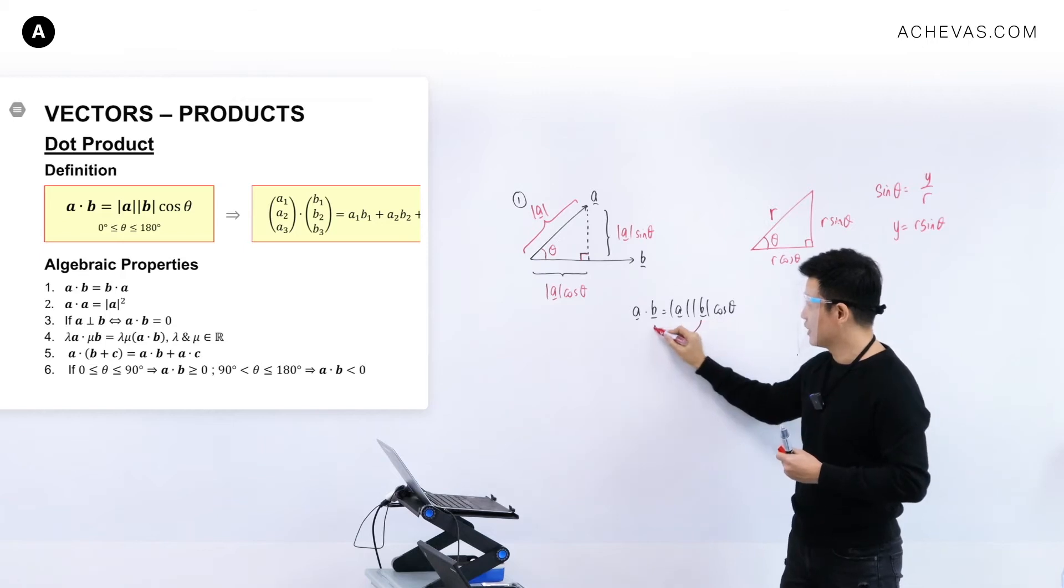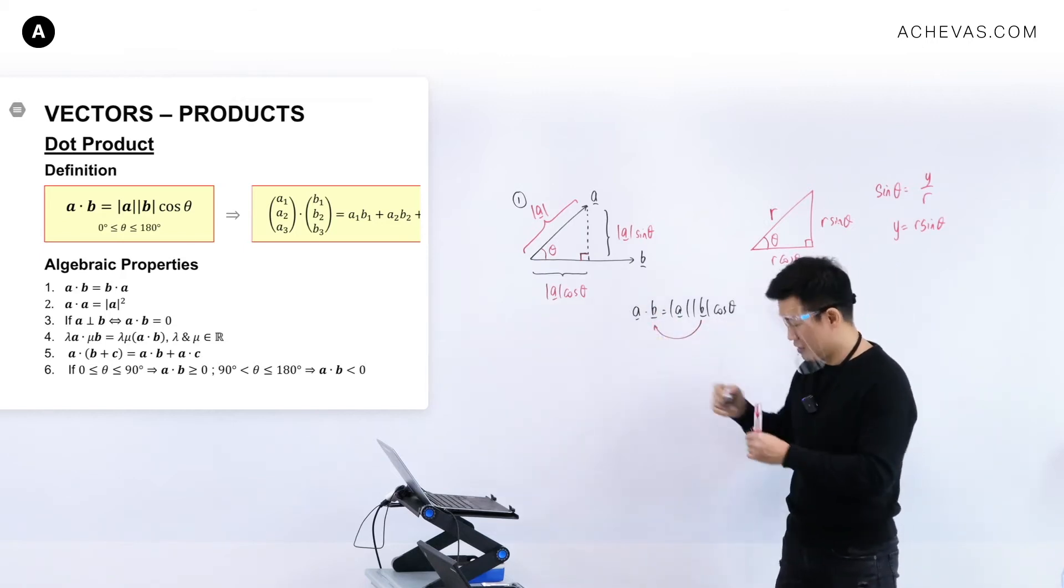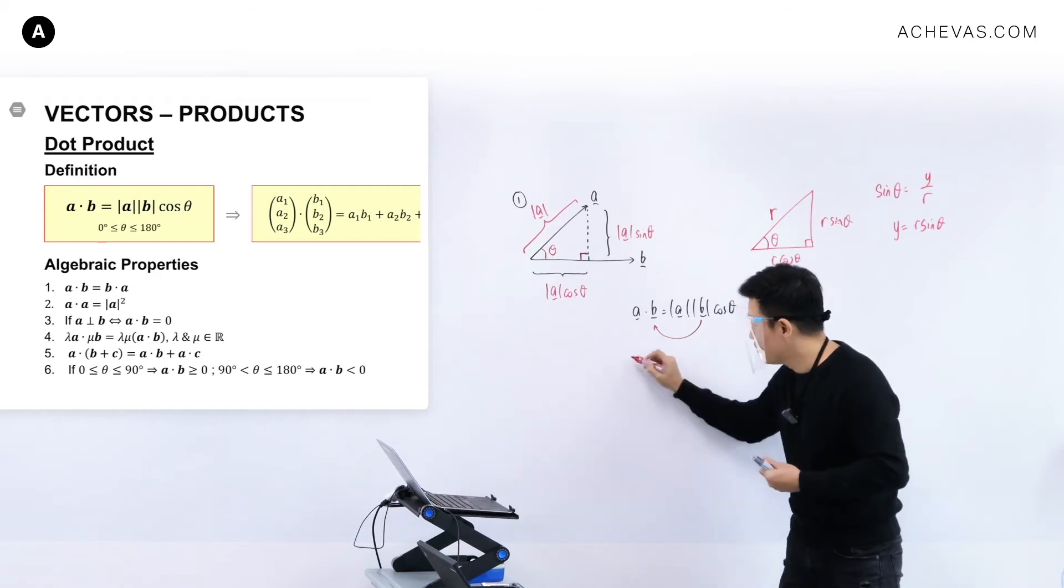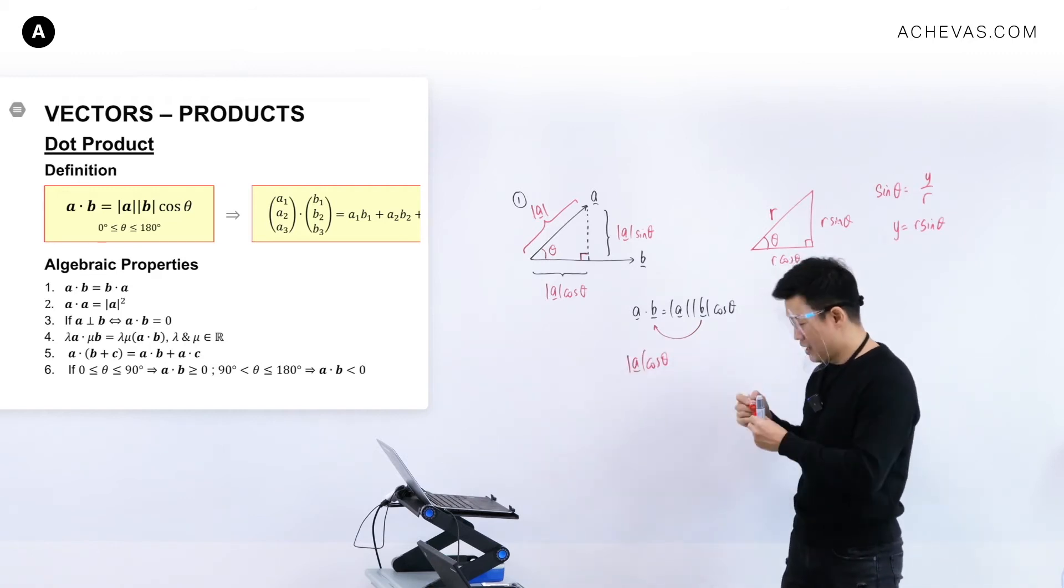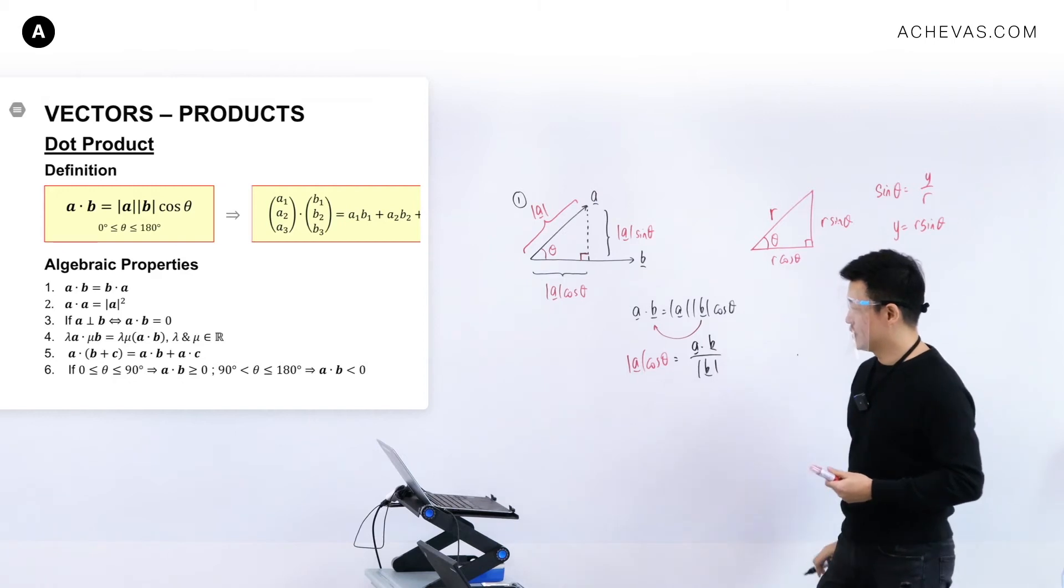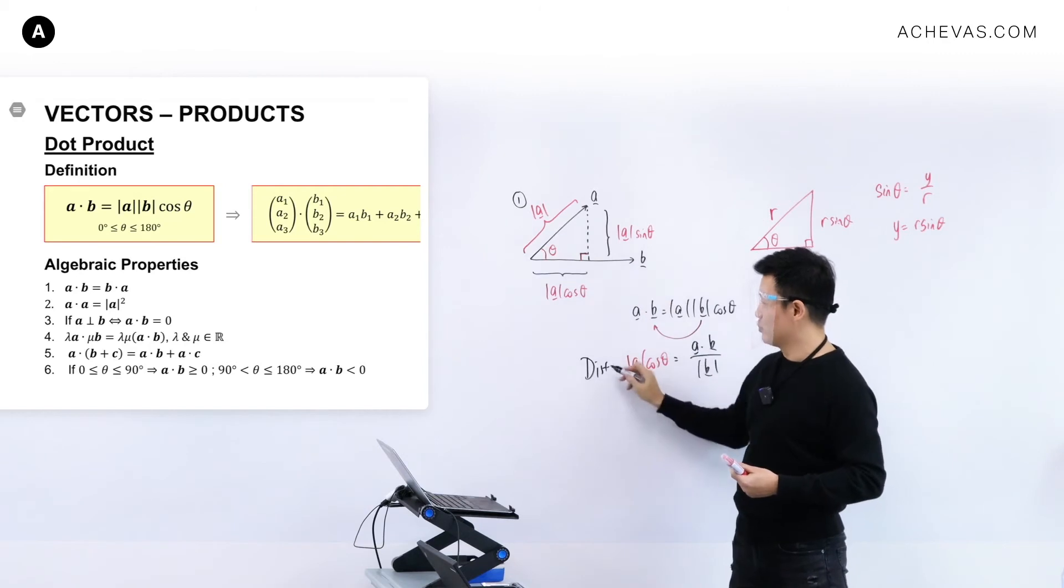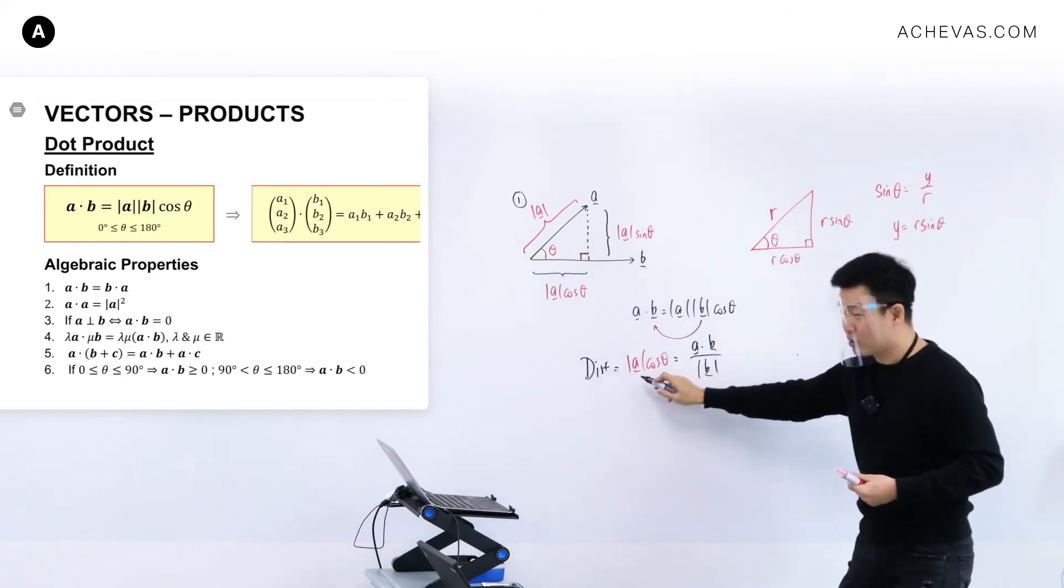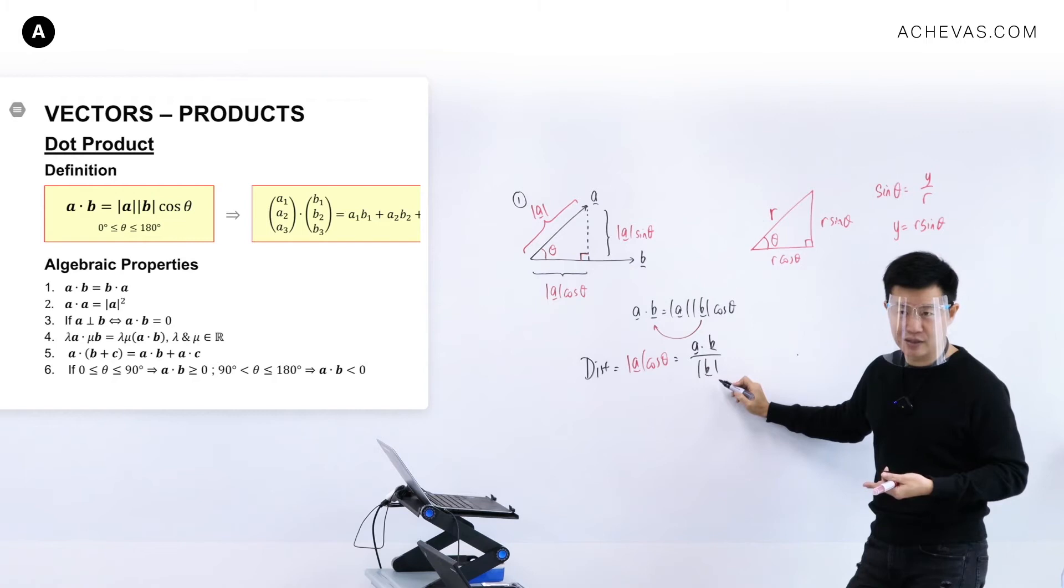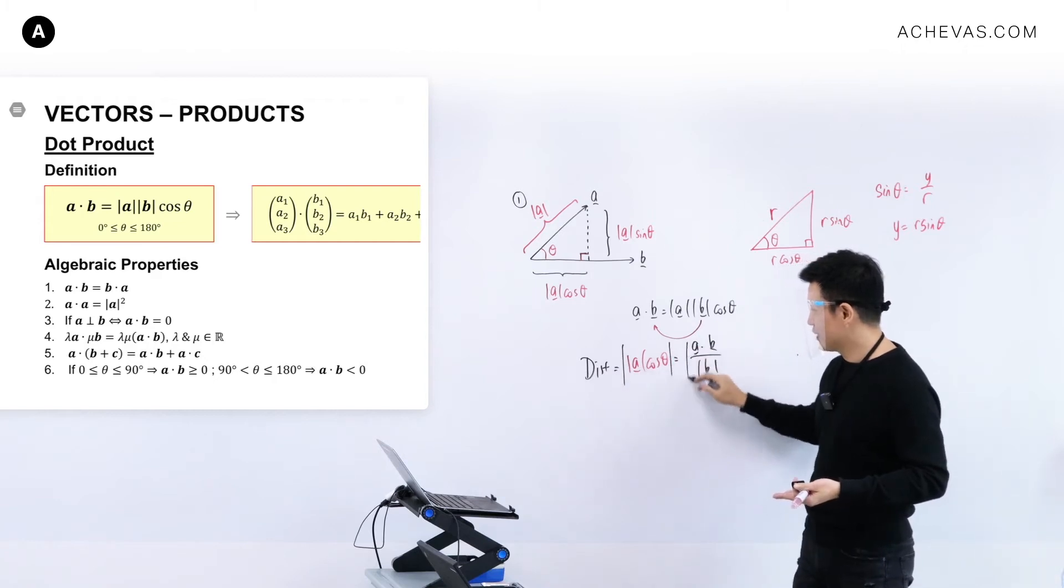So for modulus of B, I can shift it over to the other side. Which means that if I want to calculate modulus of A, cosine theta, I can basically do that using another version, which is A dot B divided by modulus of B. Which means that if I want to calculate the distance or the length of A projected onto B, the distance can be calculated either using this or can be calculated using this. Either or, whichever one that is more convenient. And I know because I am working on distance, probably I should put this extra modulus.